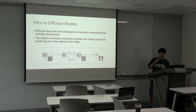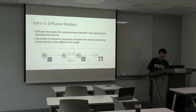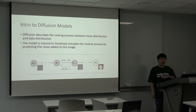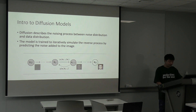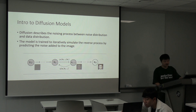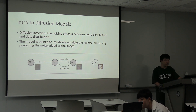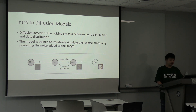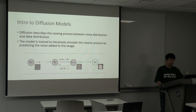A quick introduction into diffusion models: diffusion in general describes the forward and reverse noising process, where the forward process is predefined, and the reverse process is essentially learned by the diffusion model, where the diffusion model learns through noise prediction to iteratively denoise the noisy images and generate data through this reverse process.